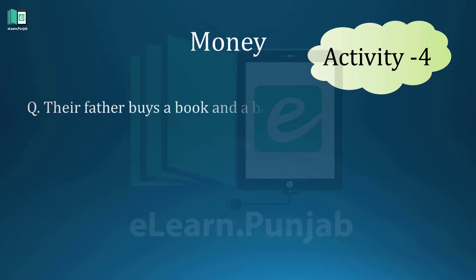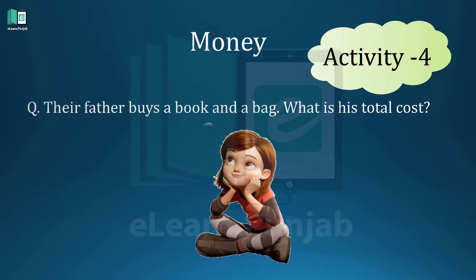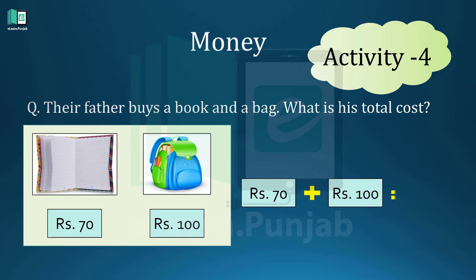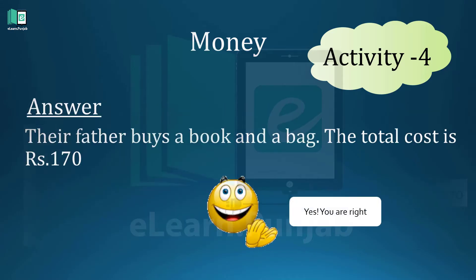And the last question is: their father buys a book and a bag. What is the total cost? Think about it. See the price of the book and bag in the picture. Calculate rupees seventy and one hundred and write the calculation in your notebook. The total cost is rupees one hundred and seventy. Yes, you are right.